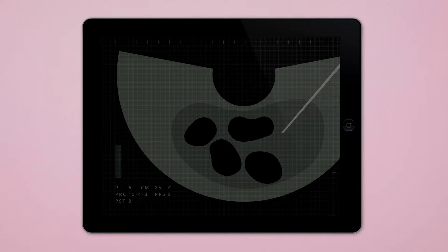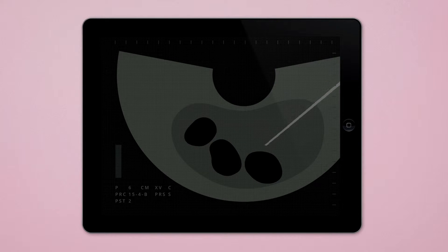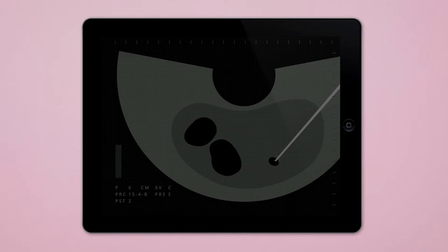The ovaries are punctured by means of vaginal echography so that the liquid contained in the follicles can be extracted for laboratory analysis to find the ova.